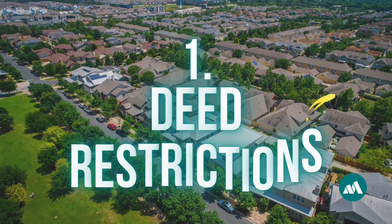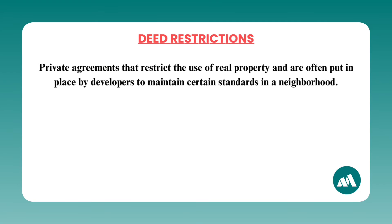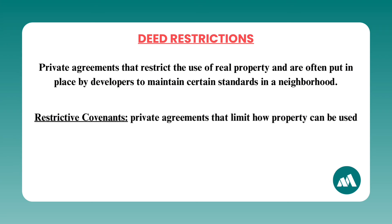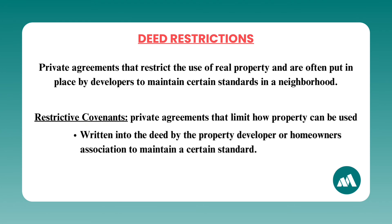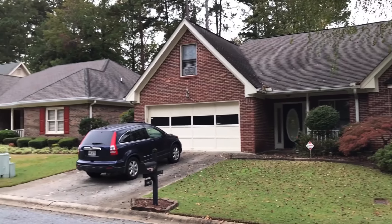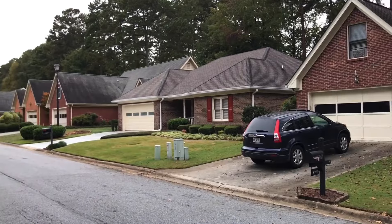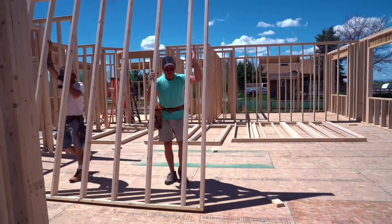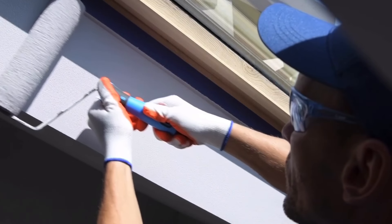First up: deed restrictions. These are private agreements that restrict the use of real property, often put in place by developers to maintain certain standards in a neighborhood. Deed restrictions are sometimes called restrictive covenants. These restrictions are typically written into the deed by the property developer or homeowners association to maintain a certain standard within a community — for example, dictating the type of structures that can be built, the materials that must be used, or even the colors that houses can be painted.